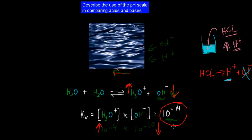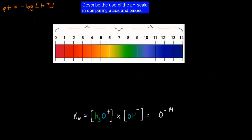That was all the idea of equilibrium. You should know that the water constant Kw equals 10^-14, and that the concentrations of hydrogen ions and hydroxide ions will always ensure that their product stays at 10^-14. The dot point says to describe the use of the pH scale in comparing acids and bases. We said 7 is neutral, 0 to 6 is acidic, and 8 to 14 is basic. pH is the negative log of the concentration of hydrogen ions. So the more hydrogen ions we have, the lower our pH, and the less we have, the higher our pH. Acids have a high concentration of hydrogen ions compared to bases.